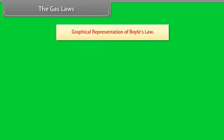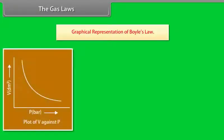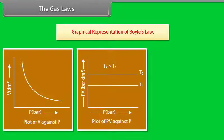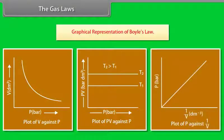Graphical representation of Boyle's law: the plot of V versus P at a particular temperature shows that as P increases, V decreases. The plot of PV versus P at a particular temperature indicates that the PV values remain constant despite a regular increase in P. The curve obtained by plotting PV against P at a particular temperature is called an isotherm. The higher curve corresponds to a higher temperature. The plot of P against 1/V shows a straight line, indicating that 1/V regularly increases with the increase in P.